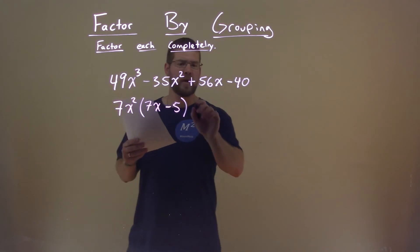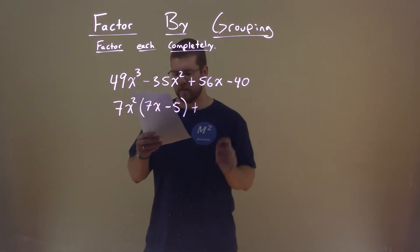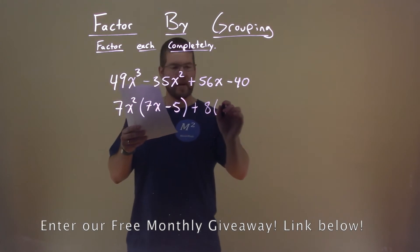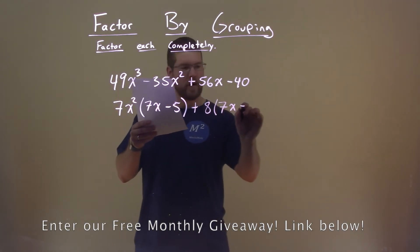We're going to do the same thing with the second two numbers here, 56 and 40. Well, 8 goes into both of those. We're left with now 7x minus 5.